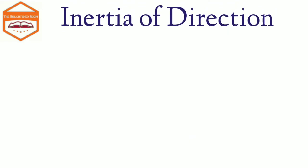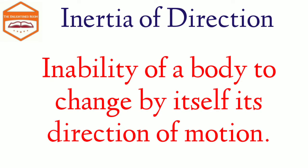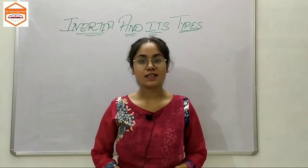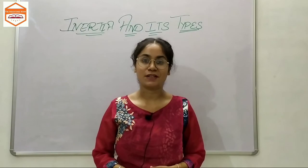Now let us discuss about inertia of direction. It is the inability of a body to change by itself its direction of motion. A body moving along a straight line will continue to move along the same direction unless some external force compels it to change direction. There are two persons sitting inside a car and the car is in motion. When the car takes a left turn, the two persons inside tend to move towards right. Similarly, when the car tends to take a turn towards right, the persons inside tend to move towards left. So in this video we discussed about inertia and its types. Hope you found my video useful. Thank you for watching.